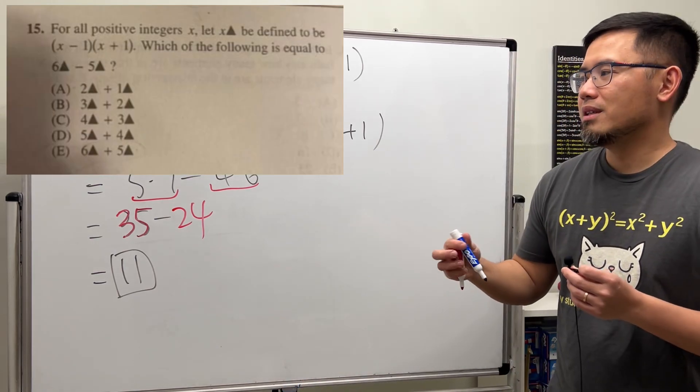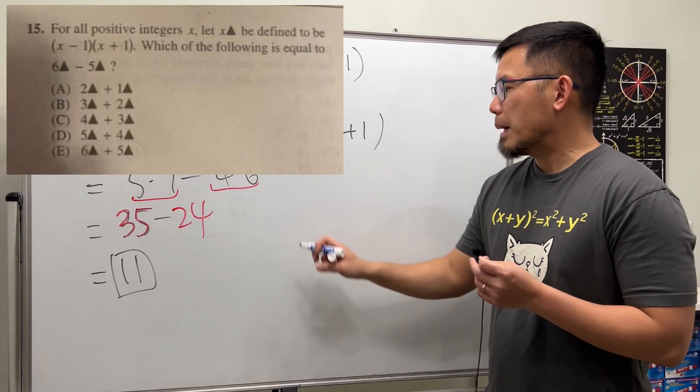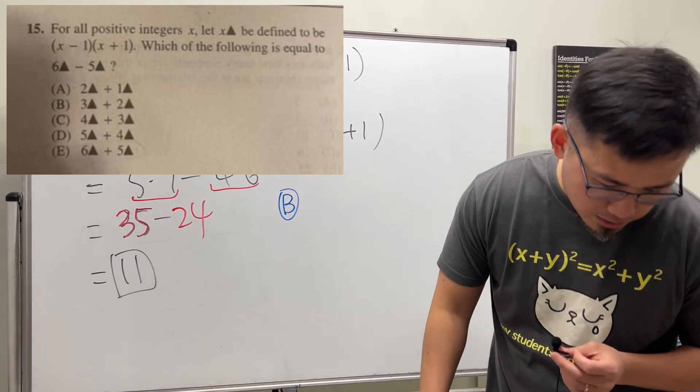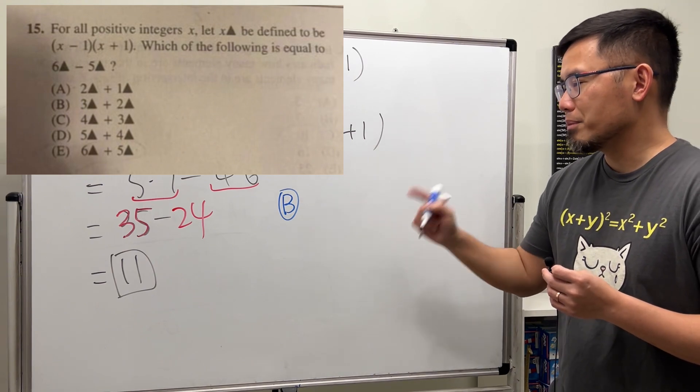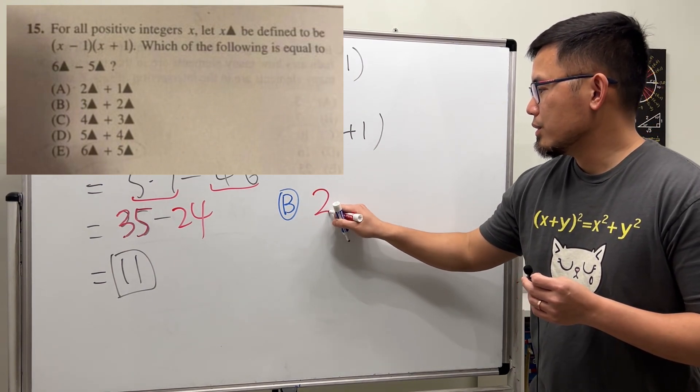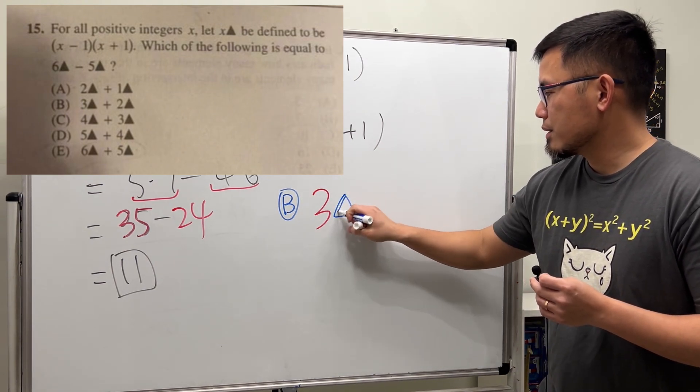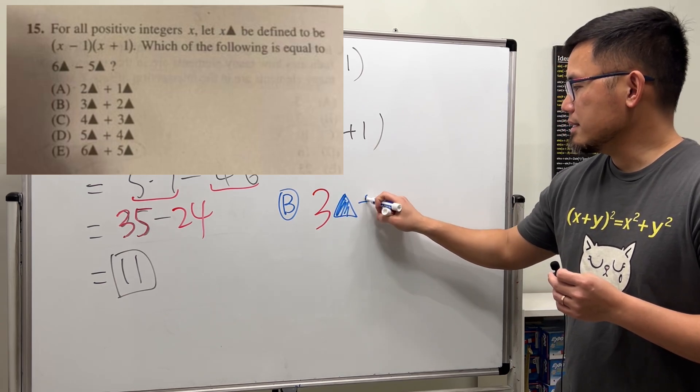We can see 35 minus 24 gives us 11, but this is not the answer though, because you have to test out the options. The option is B: 3 triangle plus 2 triangle.